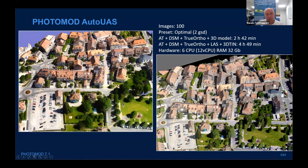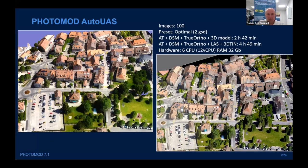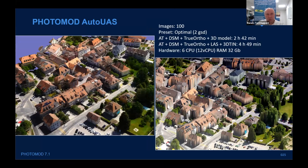Of course the 3D Model is faster and the complete TIN is slower. For this project, the preset is Optimal — which means 2 GSD compared to source data; Precise is 1 GSD and Fast is 4 GSD. Processing time: 2 hours 42 minutes for the fast 3D Model output, and about 5 hours for the complete 3D textured TIN. Hardware used: 4 cores and 32 GB of RAM.